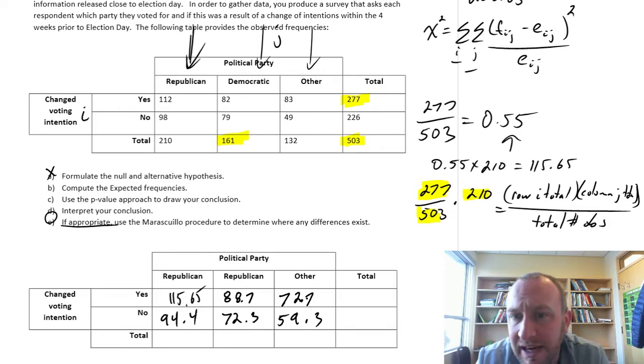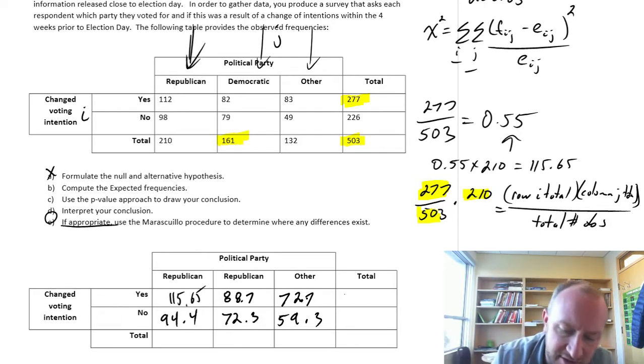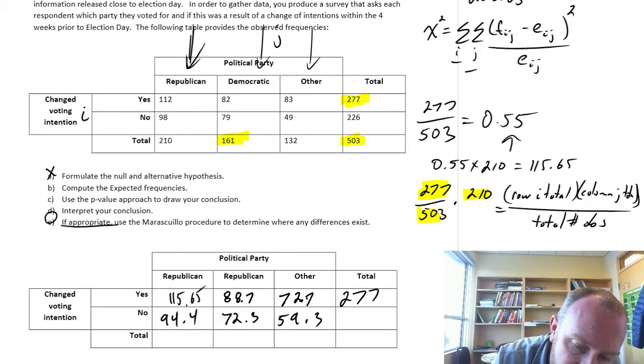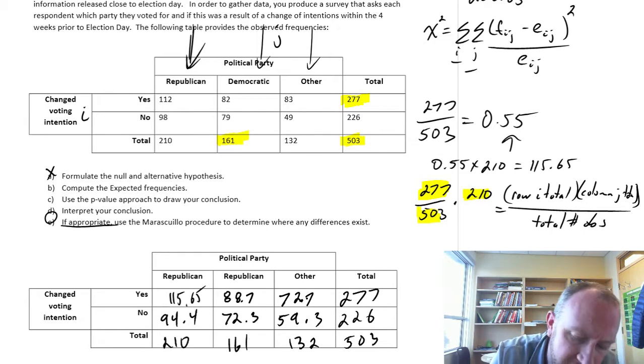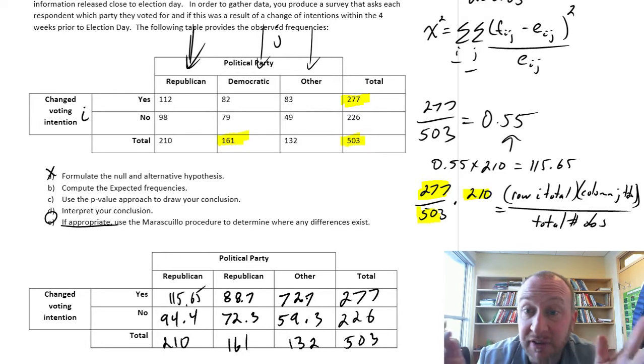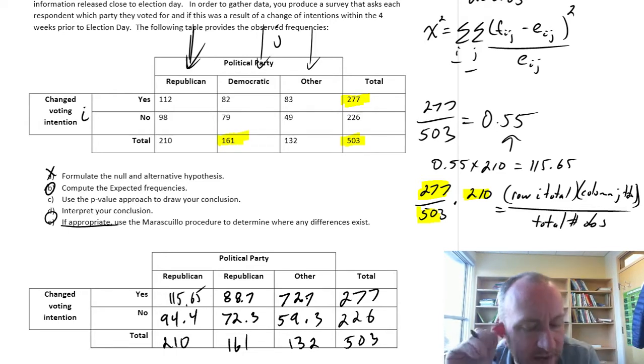Okay, now that's all we need, but a nice check to make sure that you haven't made any silly mistakes is that these should all add to the same things. So I might have some rounding errors in here, that's fine if there's some rounding error, not the end of the world, but those should definitely all add up to the same amount. So there's Part B, that's our table of expected frequencies. So if the null hypothesis is true, these are those frequencies that we would expect to see from that survey.